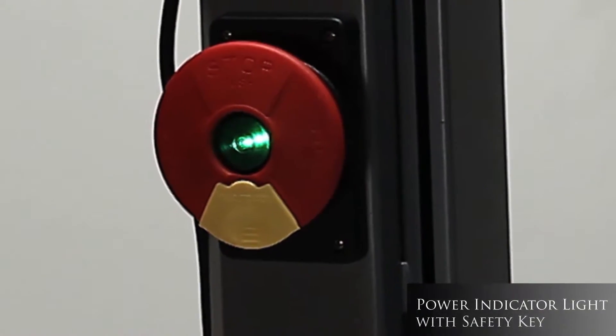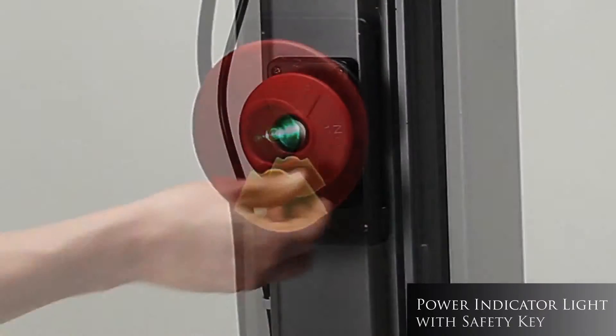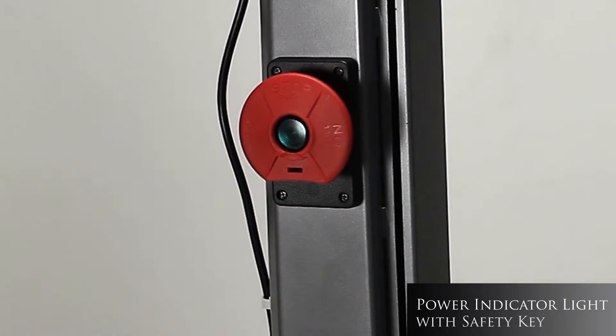The lit on and off switch indicates when there is power to the saw. The safety key can be removed to prevent unintended use.